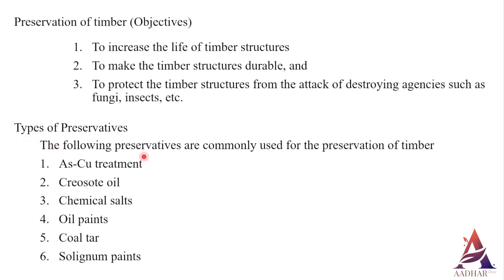Types of preservatives. The following preservatives are commonly used for the preservation of timber. Number one: arsenic copper treatment. Number two: creosote oil. Number three: chemical salts. Number four: oil paints. Number five: coal tar. Number six: selignum paints.